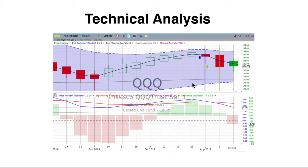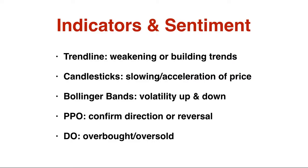We use Bollinger Bands, crossovers, price percent oscillators, trend lines, derivative oscillators — all sorts of very helpful things. We'll go through each one of the main ones that we use and discuss those in order.